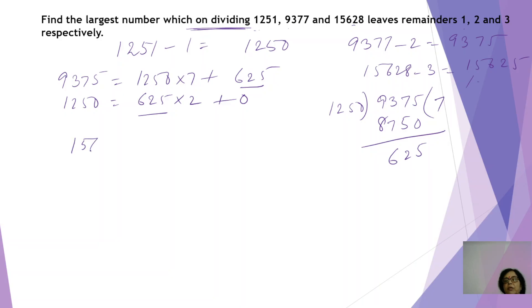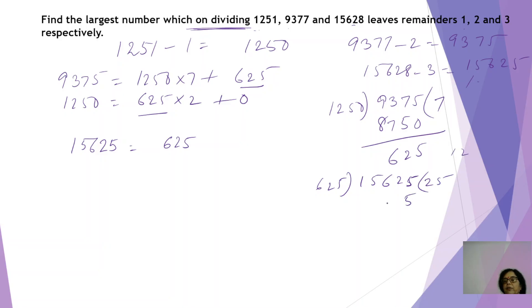Now let us check whether 625 is also the HCF of the last number 15625. Checking divisibility: 625 × 25 = 15625, so yes, 15625 is completely divisible by 625 with remainder 0. Therefore 625 is the HCF of all three numbers. That means when the original numbers are divided by 625, you will get remainders 1, 2, and 3 respectively. After removing those remainders the numbers are exactly divisible by 625.